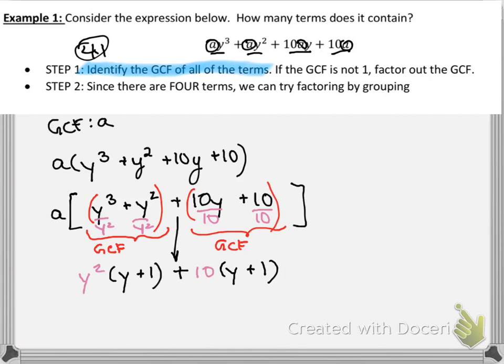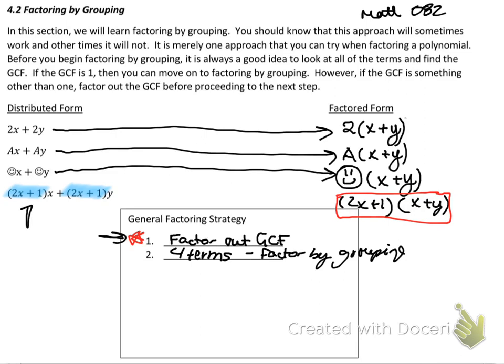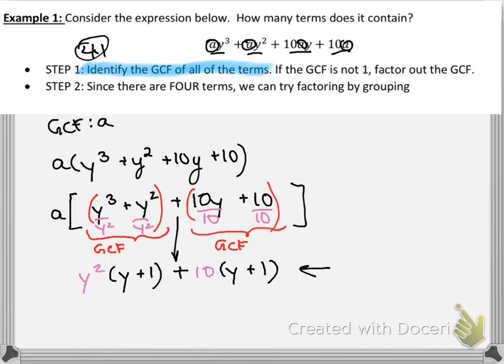So this thing right here is one of those situations where we were talking about. We have one term here. We have the same term here. So we can factor it out. So the whole point is that this Y plus 1 is here, and it's also here. So even though it's a sum of two terms, we can still factor it out. And then the pink stuff is what's left over on the inside. So we have Y squared plus 10 on the inside.